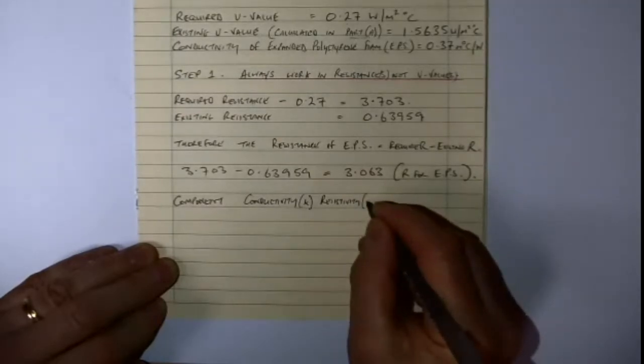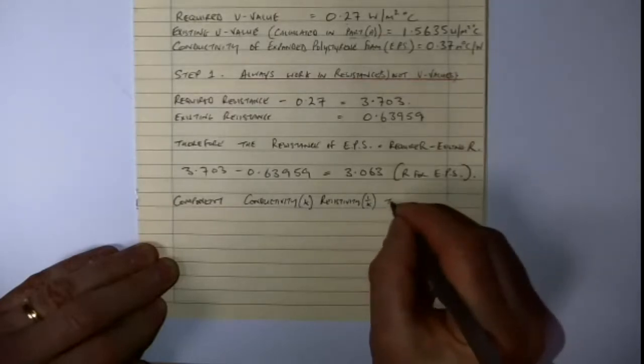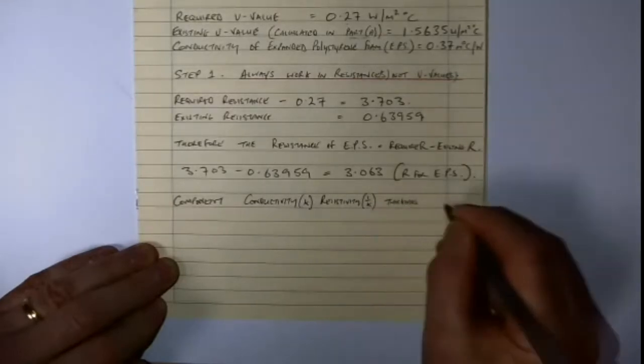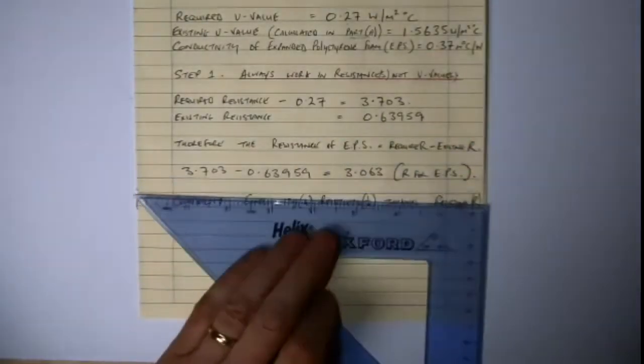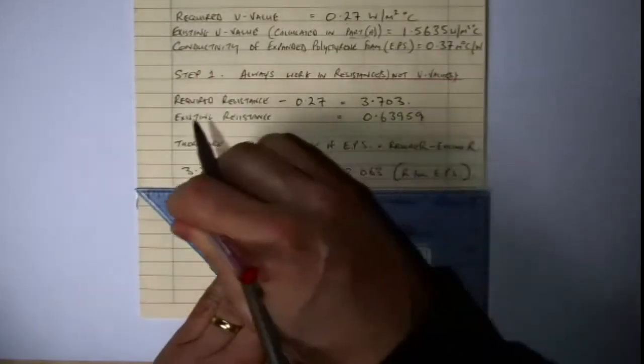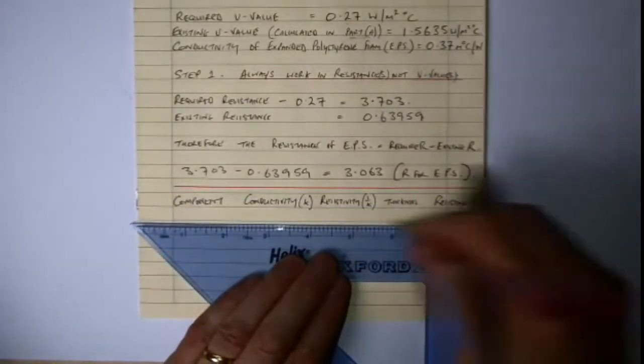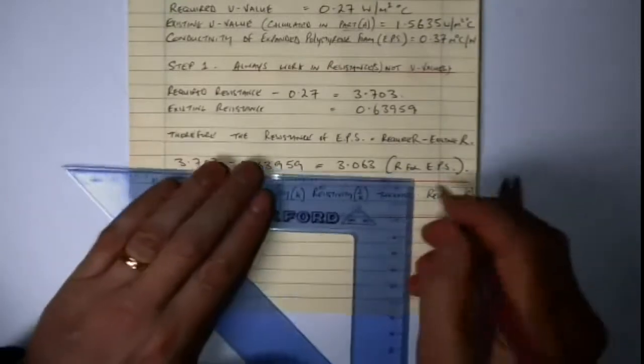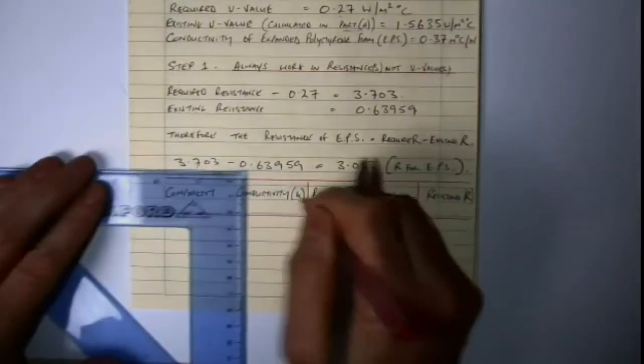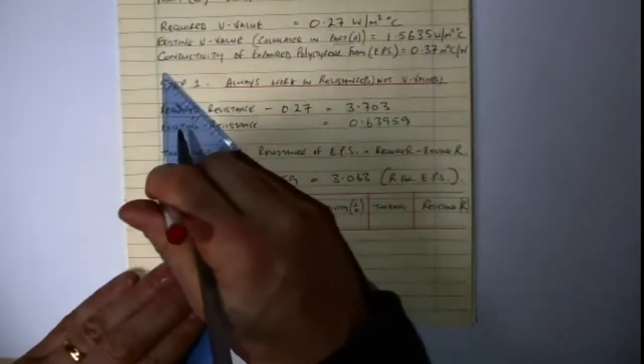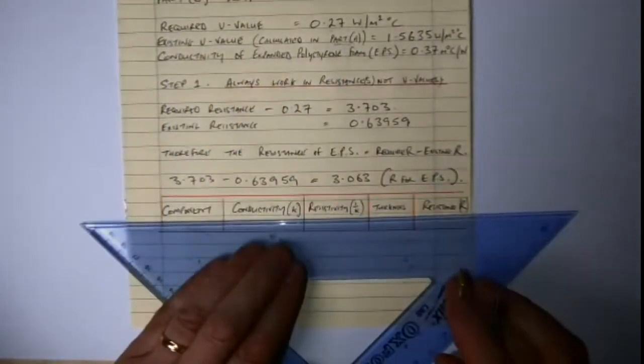And we have the resistivity, which is our 1 over K, and we have our thickness, which we don't know. And we have our resistance. Now sometimes, the reason why I have the resistivity in is because that can also be used. There's two methods in this here. So we've got the resistance, thickness, resistivity, conductivity, as you would normally have for your table and your component. And the component we have here is EPS.